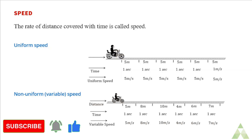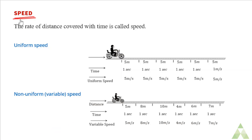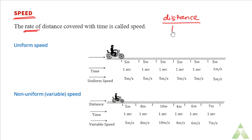In this video, we will talk about a few more quantities which are associated with motion. The first quantity is speed. The rate of distance covered with time is called speed. So this means you are calculating distance covered divided by time — that becomes the speed of the object. This is the formula for calculating speed.